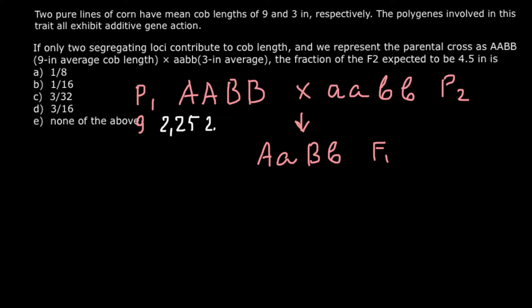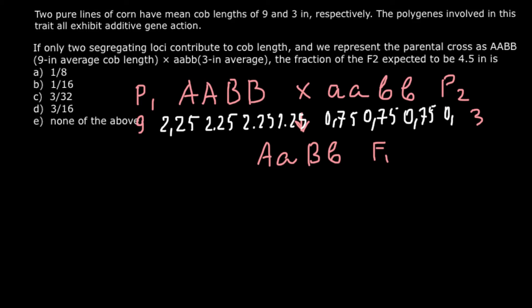When we have 4 dominant alleles together, they give us 9 inches. For parent 2 at 3 inches, each recessive allele gives us 0.75 inches, so together 4 recessive alleles give us 3 inches. This means each dominant allele contributes 2.25 inches and each recessive allele contributes 0.75 inches.